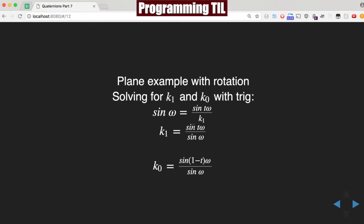So you can find out k1 is going to be sine of t omega over sine of omega. And then the same thing, k of 0 is sine of 1 minus t omega over sine of omega.